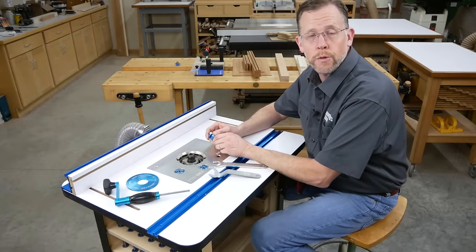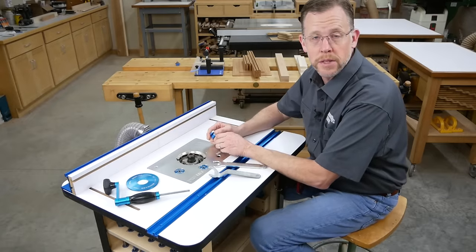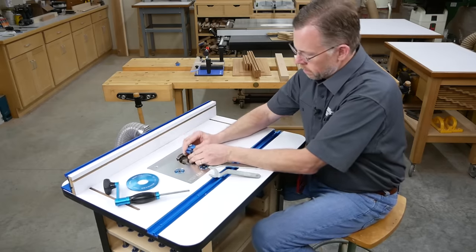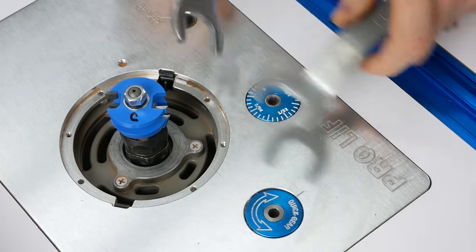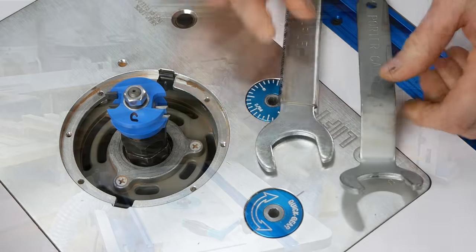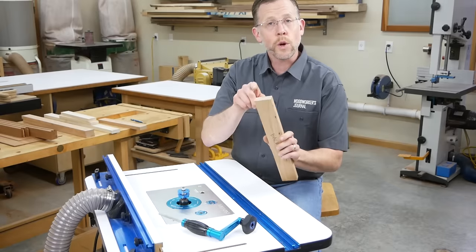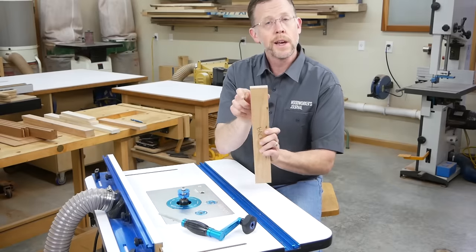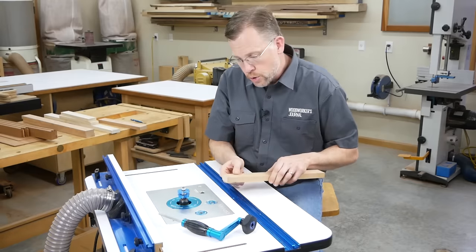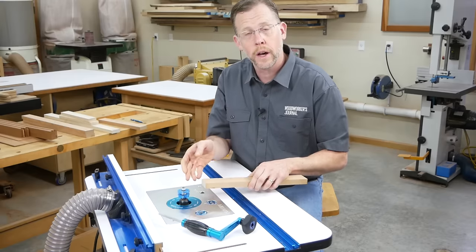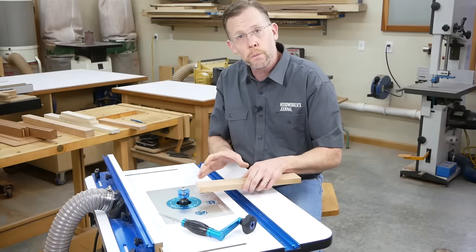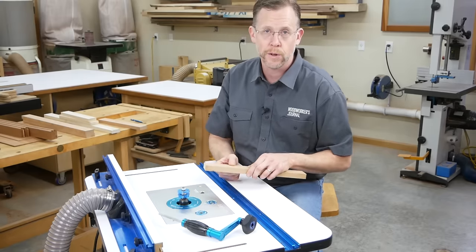We're going to cope the ends of the rails first because I think it's easier to set up the sticking cutter using one of the coped rails. So go ahead and install your coping bit. Now remember, the coping cuts only happen on the ends of the rails. But these ends are narrow and rails tend to be pretty short, so that makes it dangerous to present the ends of the work pieces to the coping cutter without some means of backup support.